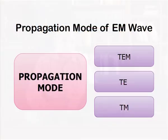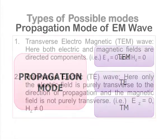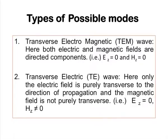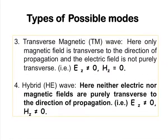The propagation modes: three types are possible — transverse electromagnetic waves, transverse electric waves, and transverse magnetic waves. In the case of a waveguide, the possible modes are TE mode, where the electric field is transverse or perpendicular to the direction of propagation but the magnetic field has a component along the direction of propagation. In TM mode, the magnetic field is perpendicular to the direction of propagation and the electric field has one component in the direction of propagation. There is also the hybrid mode, where both electric and magnetic field components exist along the direction of propagation.